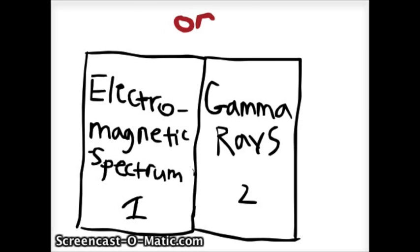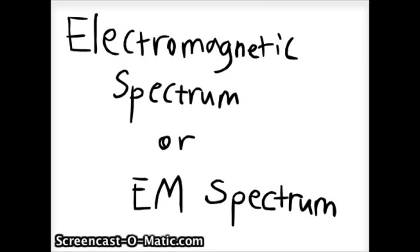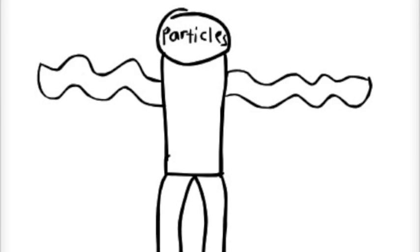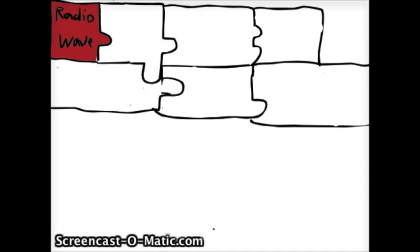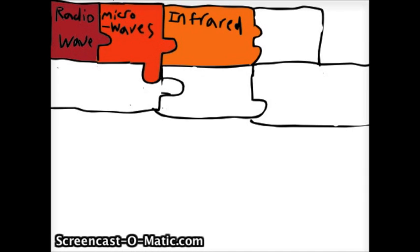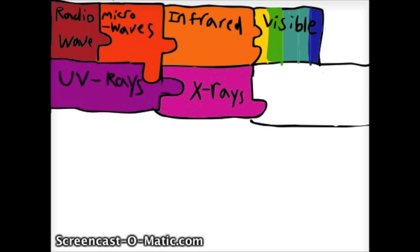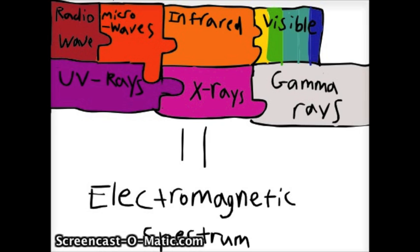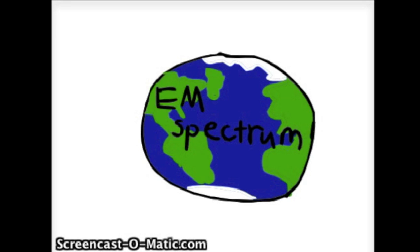Before we go in depth about the question and gamma rays, we need to have a bit of background information about the electromagnetic spectrum, or EM spectrum for short. They are basically particles that act like waves and they are mainly composed of radio waves, microwaves, infrared, visible light, UV rays, x-rays, and gamma rays.